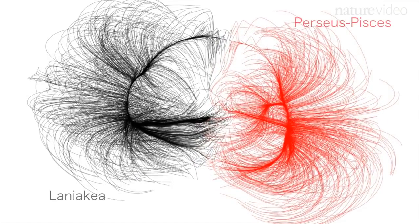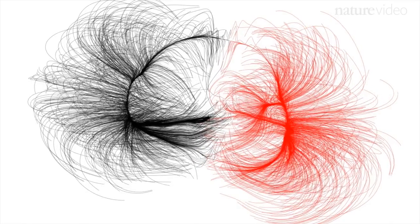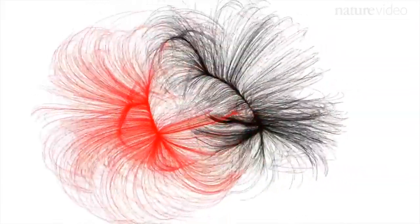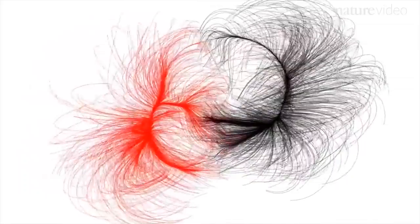And a neighbouring structure, Perseus Pisces, in red. Scientists defined the boundary as the points where the flows of galaxies diverge, like water dividing at a watershed. This is where neighbouring structures shear apart.